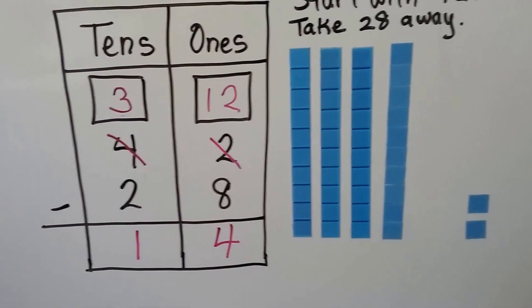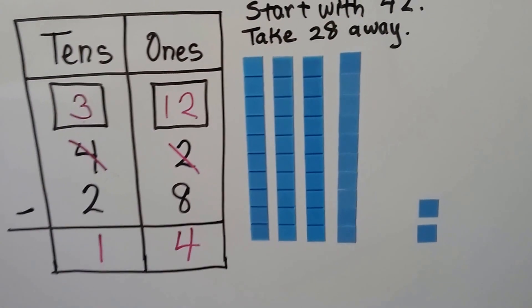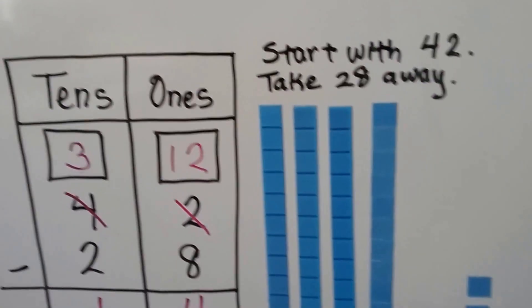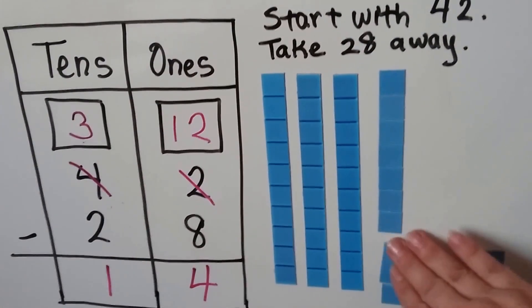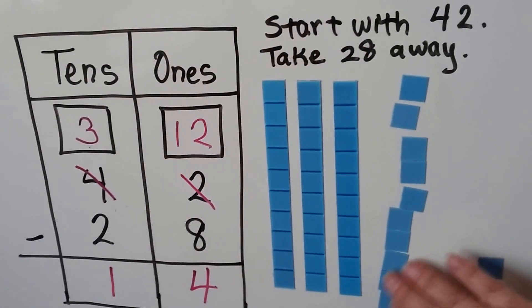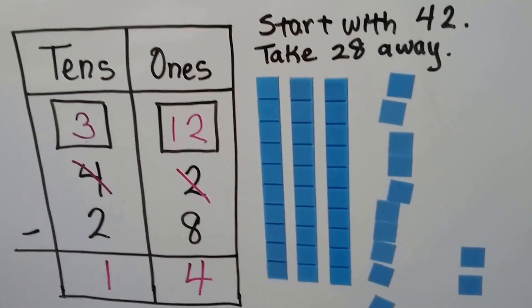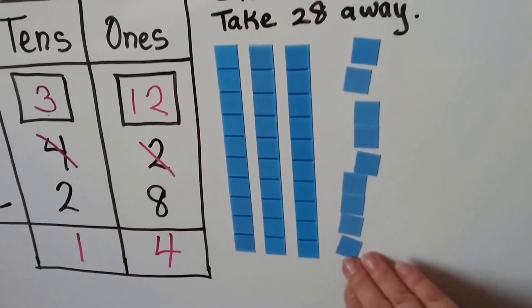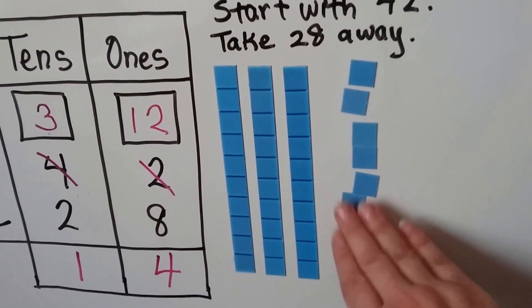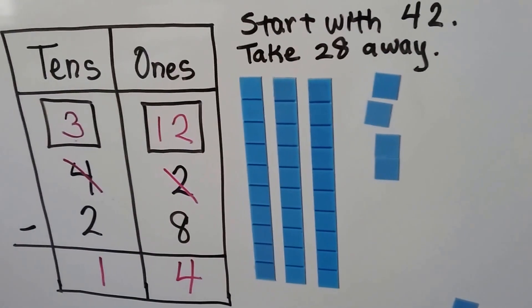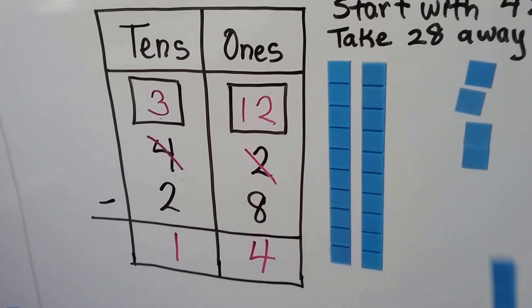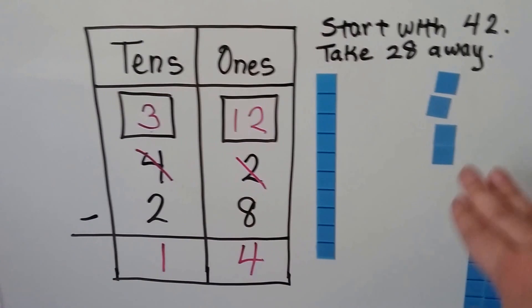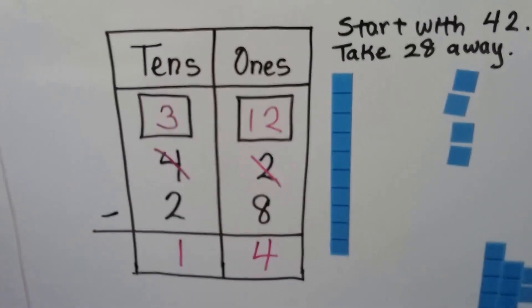We can check it with our models. We have 42 units here. We're going to take away 28. So we break 1 of the tens up as ones. Now we can take 8 of them away. 1, 2, 3, 4, 5, 6, 7, 8. We need to take away 2 tens. 1, 2, and we're left with 1 ten and 4 ones. So yeah, we did it correctly.